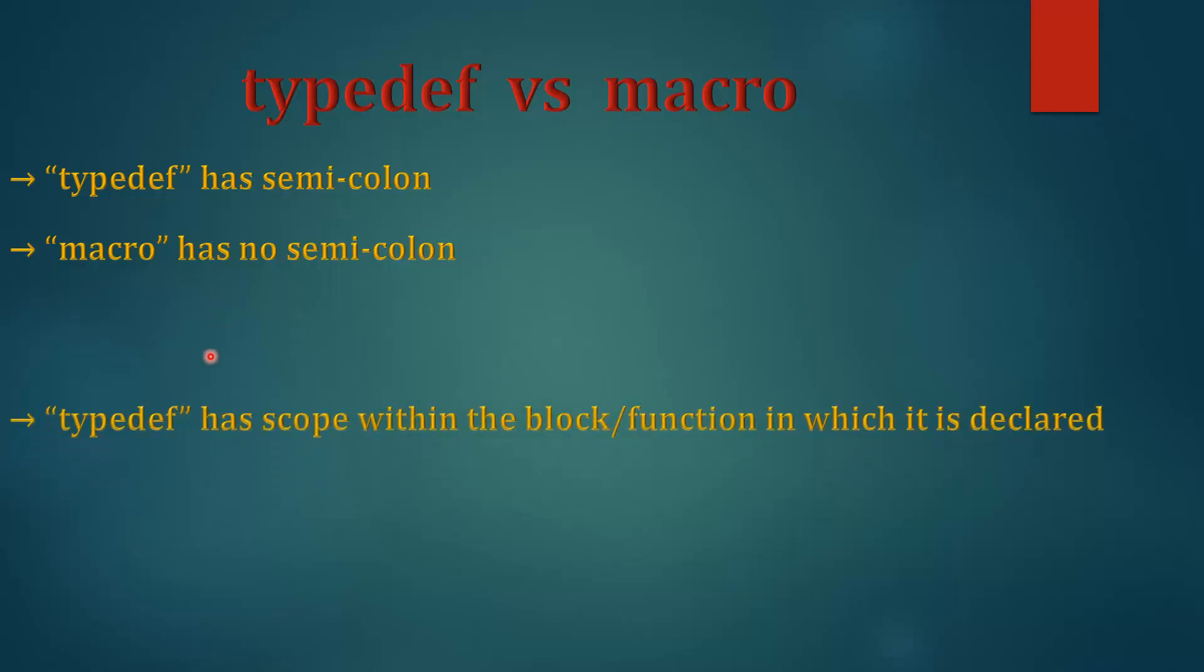And one last key difference is typedef has scope within the block or function in which it is declared. But macro replaces all the occurrences. For example, in the last example, we saw that wherever HYD is written, it will be replaced by Hyderabad in double quotes throughout all the code, wherever it appears, all the occurrences.